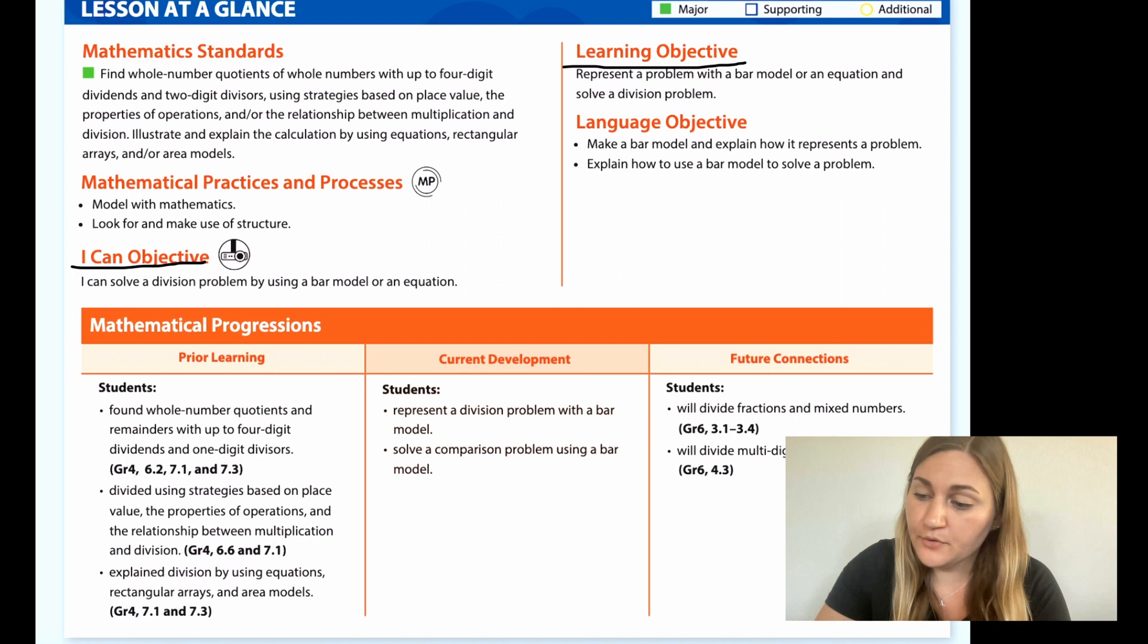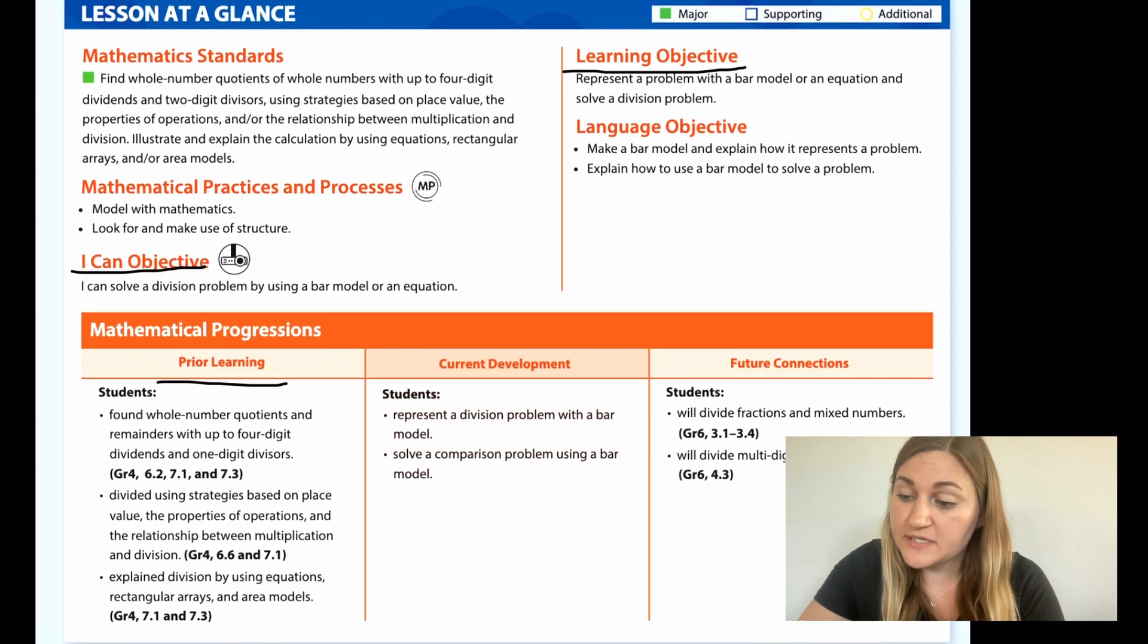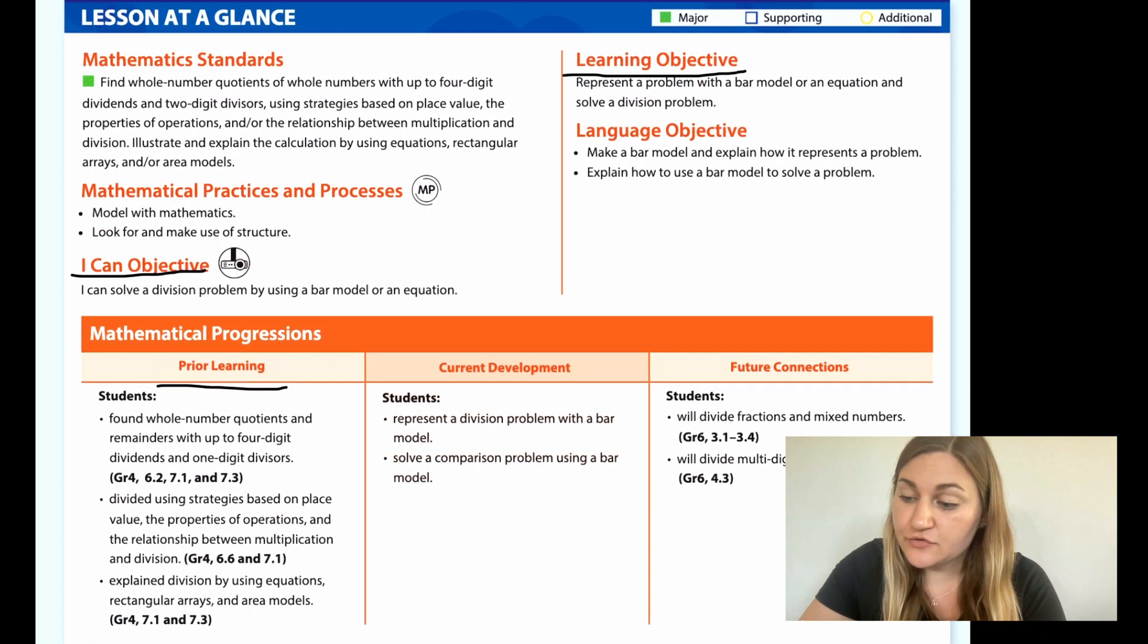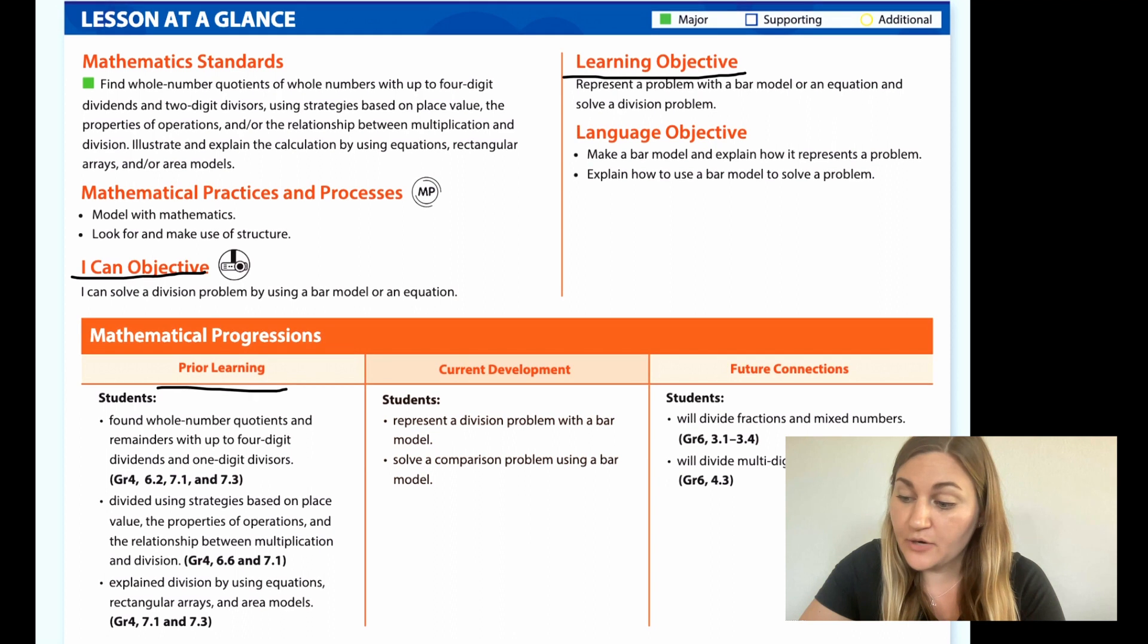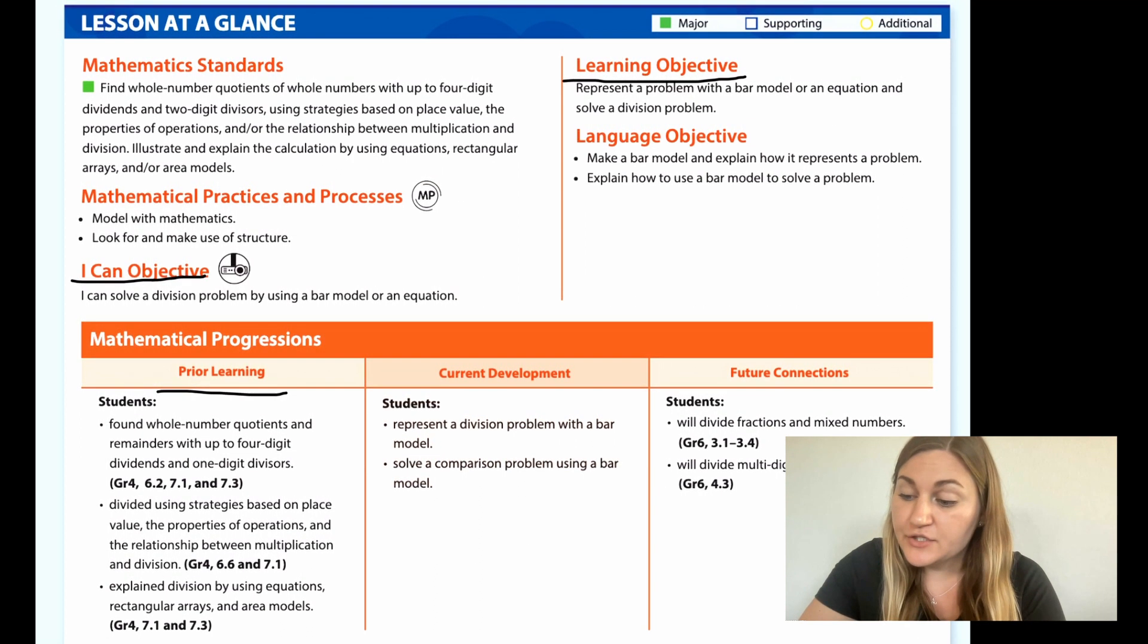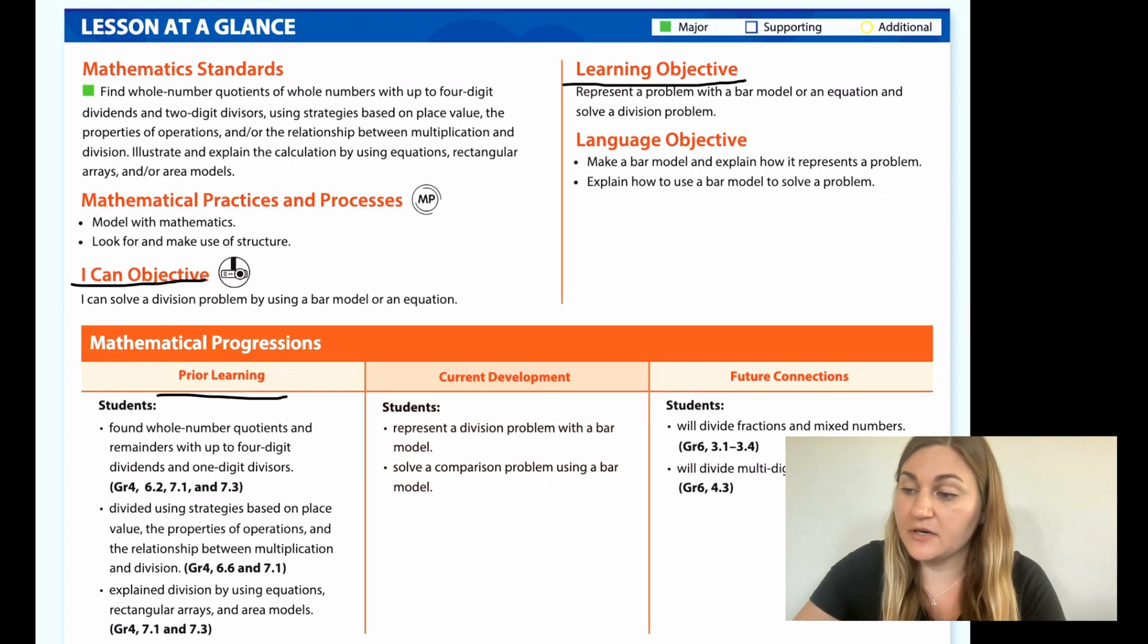The prior learning says students found whole number quotients and remainders with up to four-digit dividends and one-digit divisors. Students divided using strategies based on place value, the properties of operations, and the relationship between multiplication and division. Students explained division by using equations, rectangular arrays, and area models.